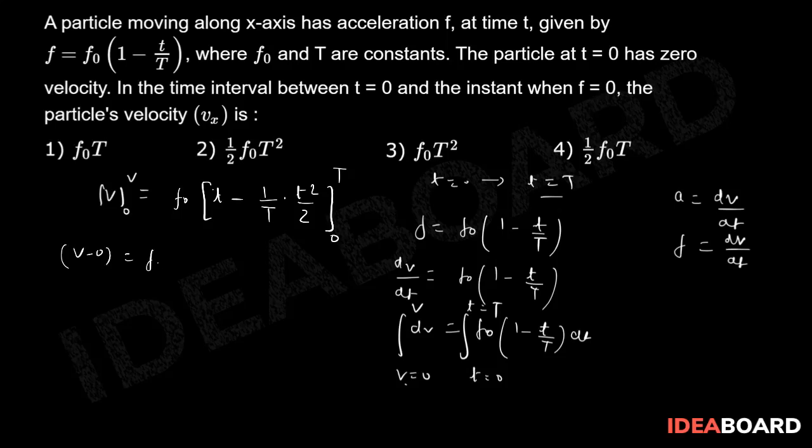This will be v minus 0 equals f₀. If you substitute the limit, this will be T minus (1 upon T) into (T squared by 2), and when you put 0 you will get 0 only.